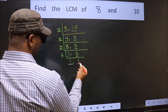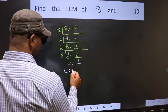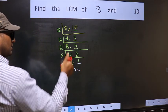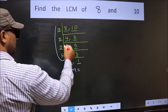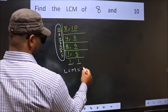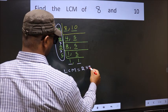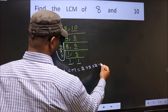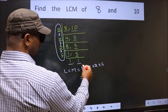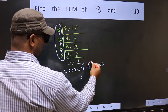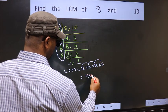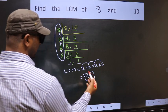We got 1 in both places. So, our LCM is the product of these numbers: 2 into 2 into 2 into 5. Let us multiply these numbers. 2 into 2 is 4, into 2 is 8, into 5 is 40. So, 40 is our LCM.